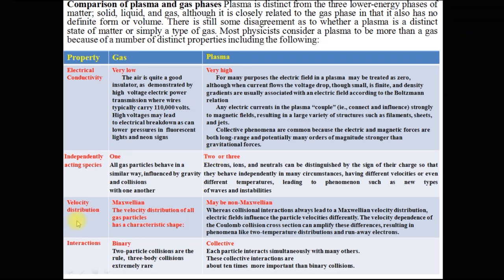The third property is velocity distribution. Atoms of gas follow Maxwellian distribution, but inside the plasma there may be non-Maxwellian plasma. The next important property is interactions. Inside the gas, particle interactions are binary, while inside the plasma, particle interactions are collective, because plasma contains charged particles and if a charged particle moves, it affects all the neighboring particles.